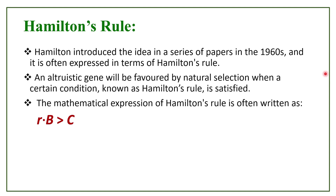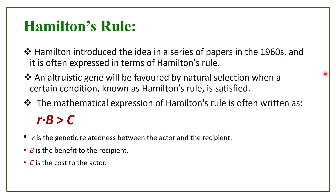R is the coefficient of relatedness between the donor and the recipient, or the actor and the recipient. B is the benefit received by the recipient — the altruist is giving some benefit to the recipient. C is the cost incurred by the altruist. When the product of R and B is greater than C, we can say that the altruistic gene can be favored by natural selection. Otherwise, if someone is risking their life and getting no benefit, it would become invalid with time.